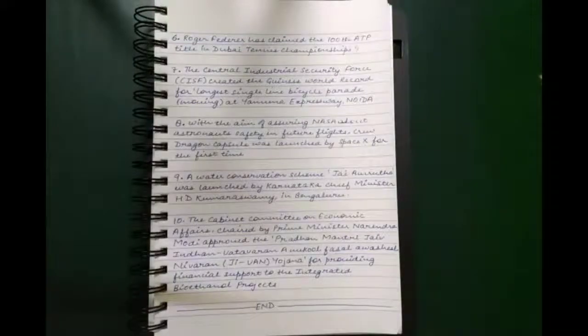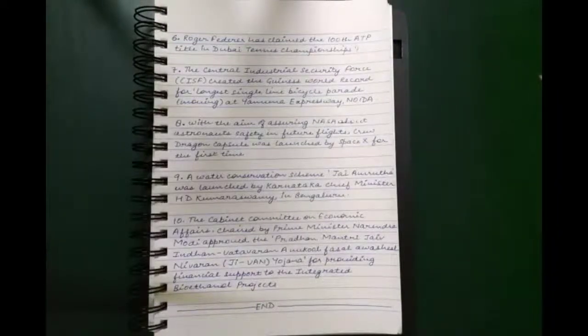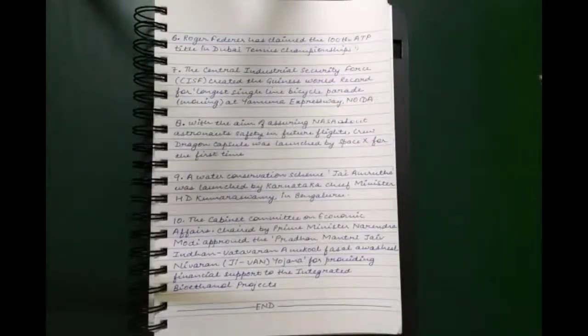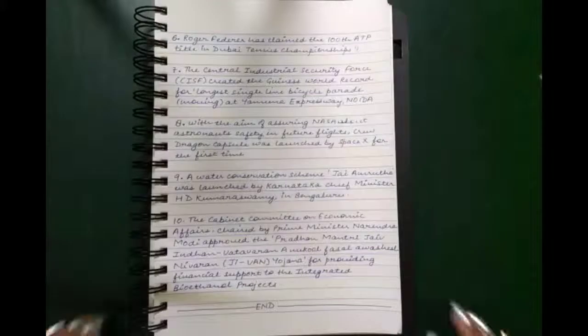Ninth, a water conservation scheme Jal Amruta was launched by Karnataka Chief Minister H.D. Kumaraswamy in Bengaluru.